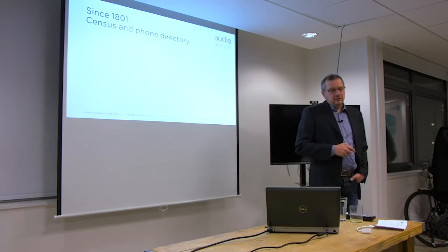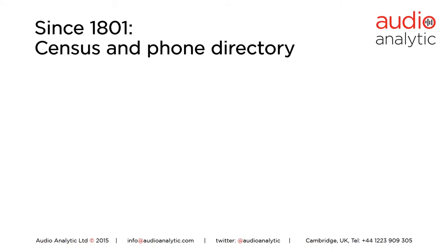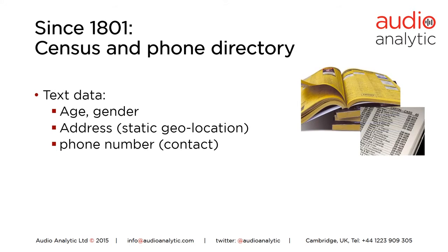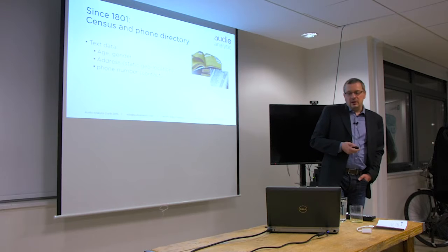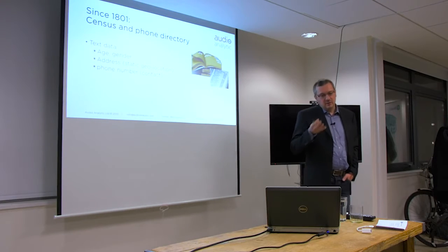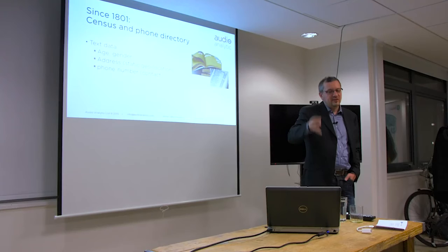Let's take a little historical walk along natures of data. The earliest data collections were census and phone directories — since 1801 you had census data. The nature of that data is text data, covering age, gender, address, which is a form of static geolocation, and your phone number as a contact address. It's starting to outline profiling of people in very simple terms of census and phone data.